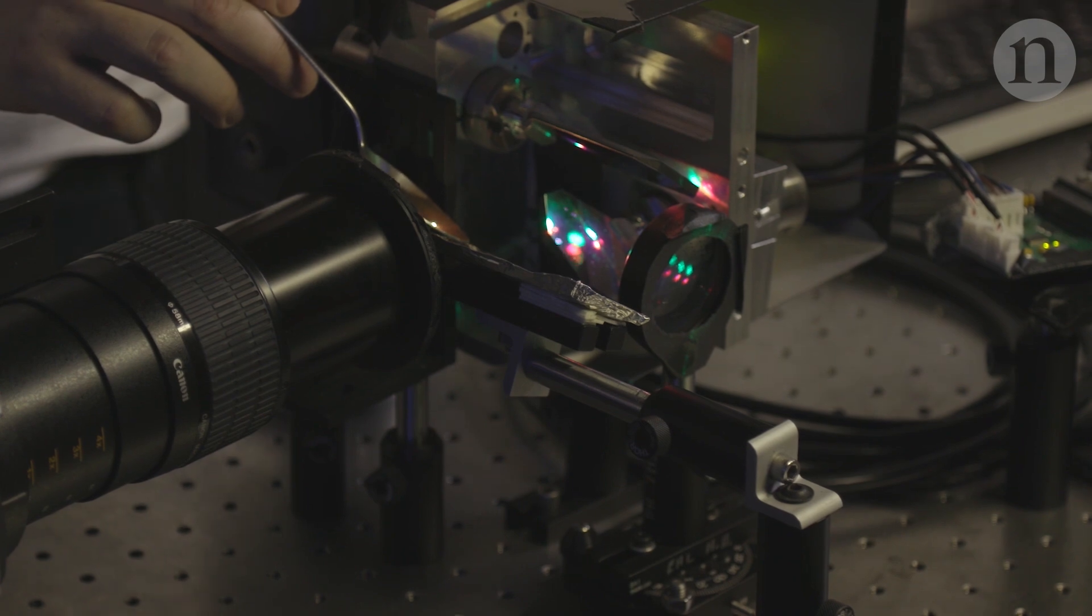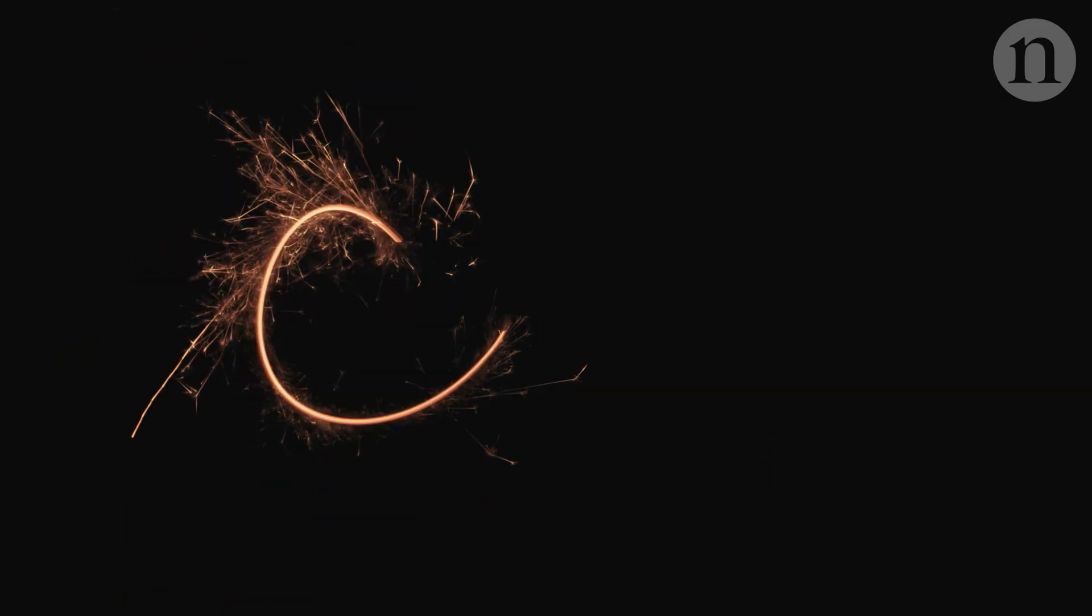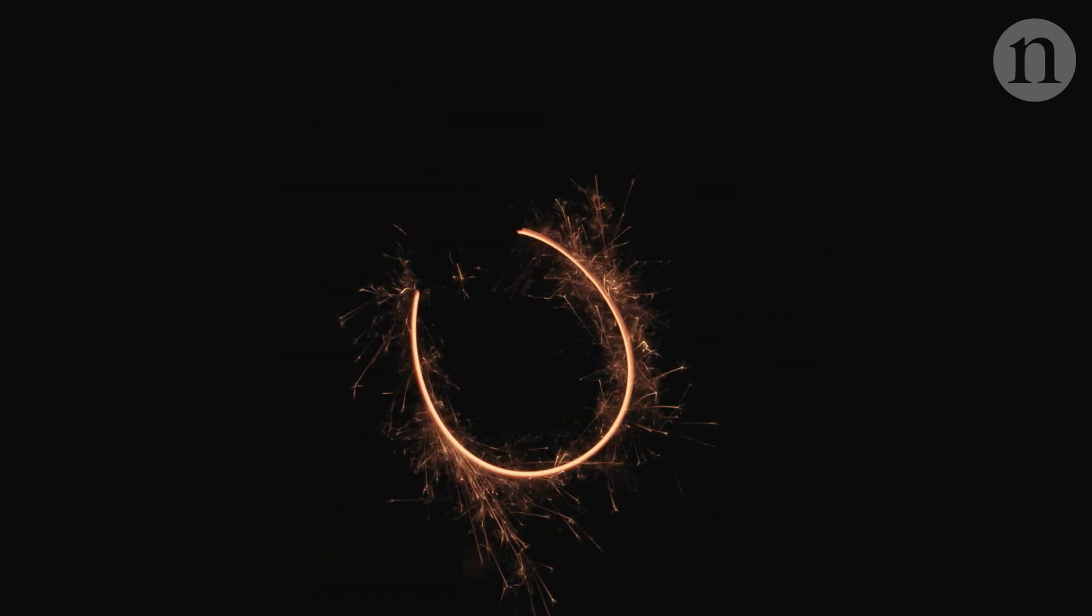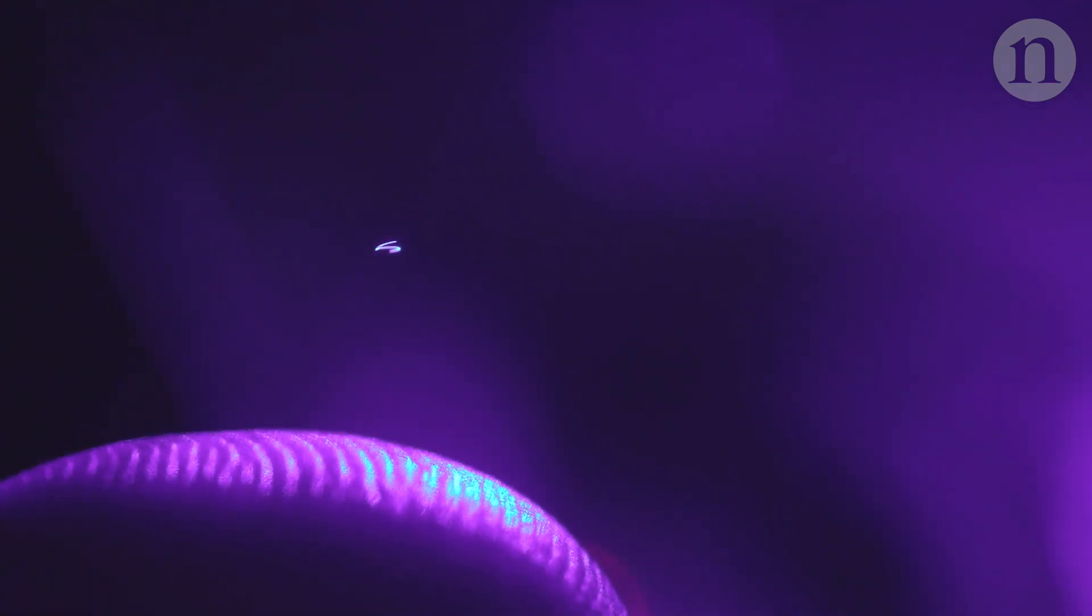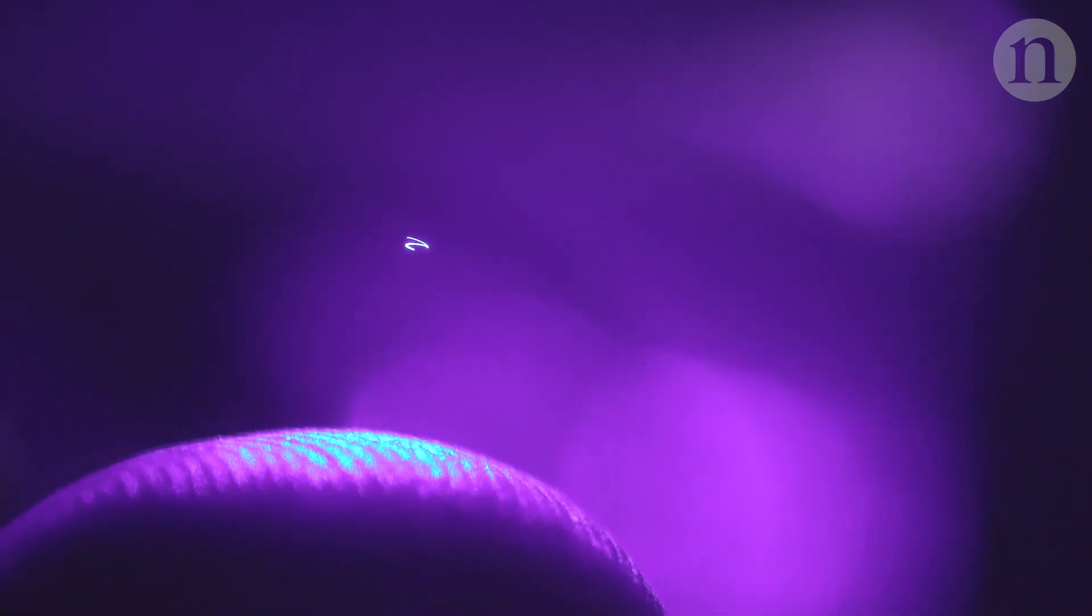We can move that particle, we can basically steer that beam around to move the particle and create the image. Like when you swing a sparkler around, a particle moving fast enough looks like a solid line and can be moved to form a shape.